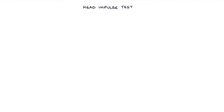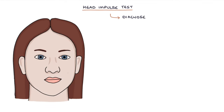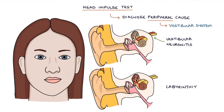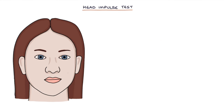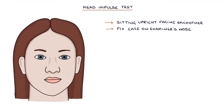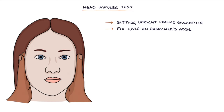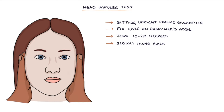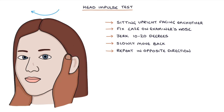Let's talk about the head impulse test. The head impulse test can be used to diagnose peripheral causes of vertigo resulting from problems with the vestibular system, for example vestibular neuronitis or labyrinthitis. The test involves the examiner and the patient sitting upright facing each other, with the patient fixing their gaze on the examiner's nose. The examiner then holds the patient's head and rapidly jerks it 10 to 20 degrees in one direction, while the patient continues looking at the examiner's nose. The head is slowly moved back to centre before repeating the jerk in the opposite direction, again 10 to 20 degrees.